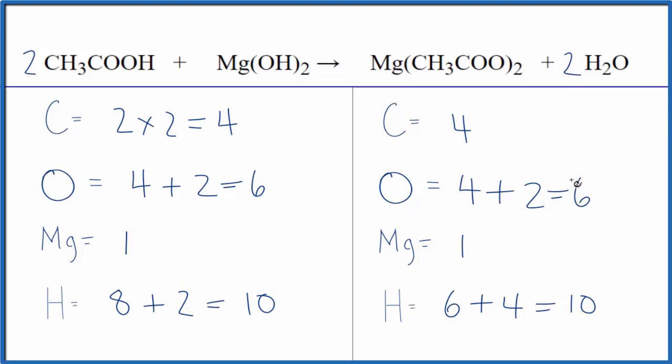And this equation is balanced. So it's kind of an involved equation, but if you're careful and you count everything up on each side, you should be okay. This is Dr. B with the balanced equation for CH3COOH plus Mg(OH)2, acetic acid plus magnesium hydroxide. Thanks for watching.